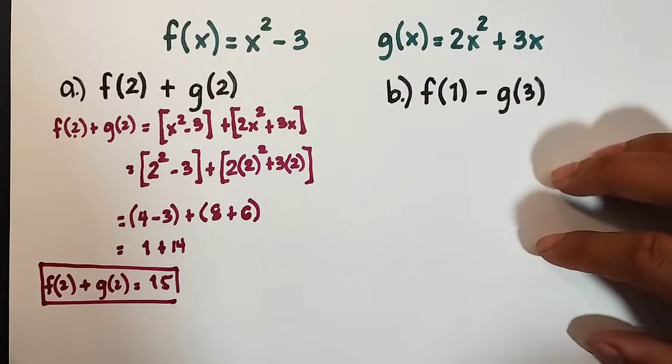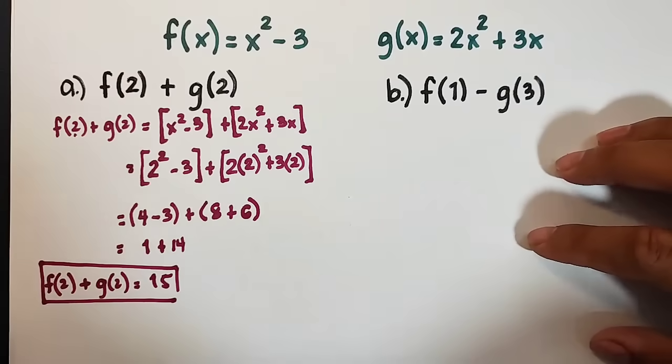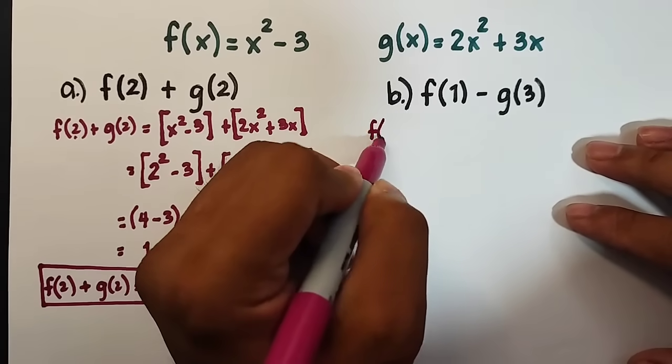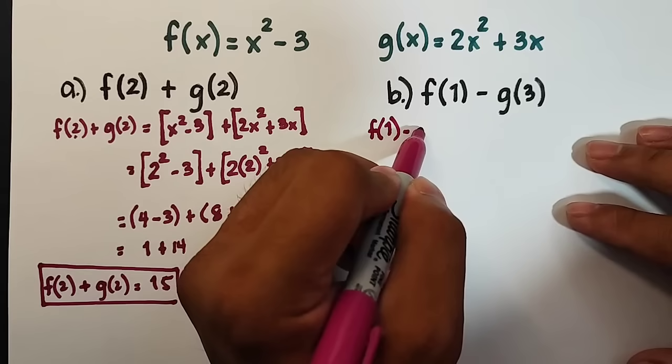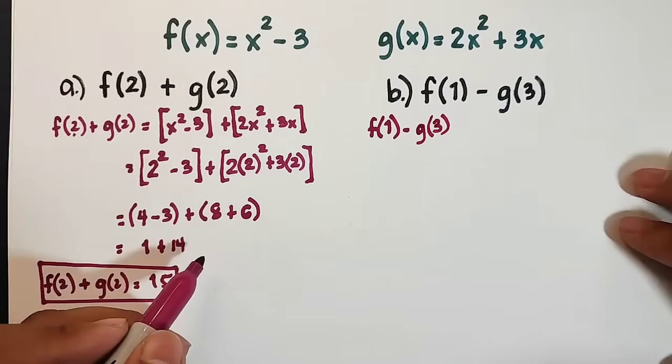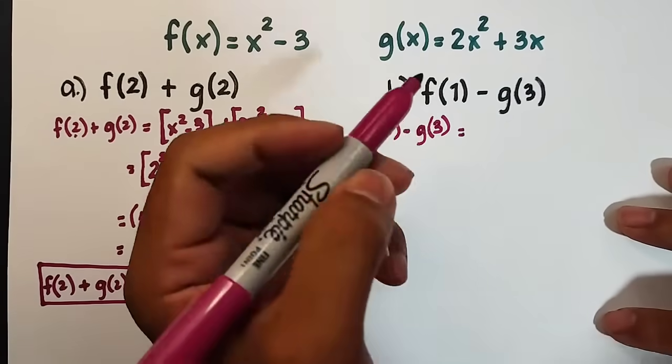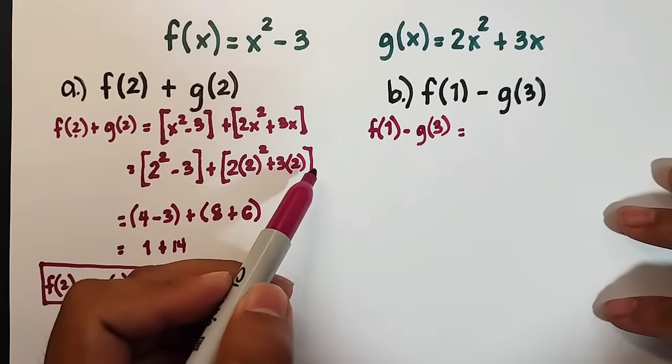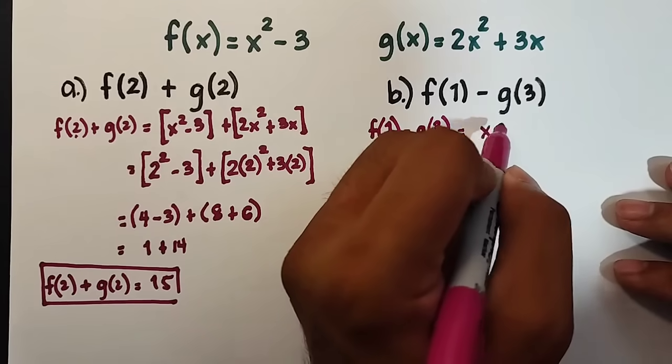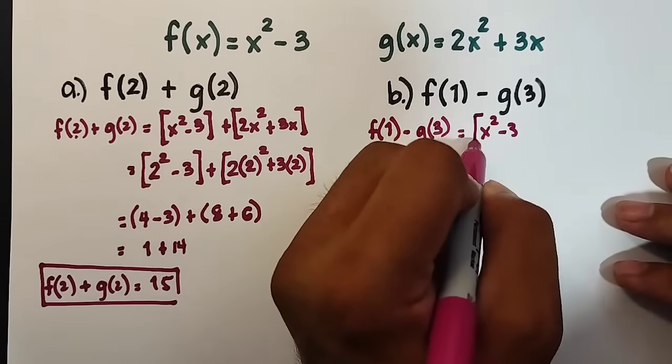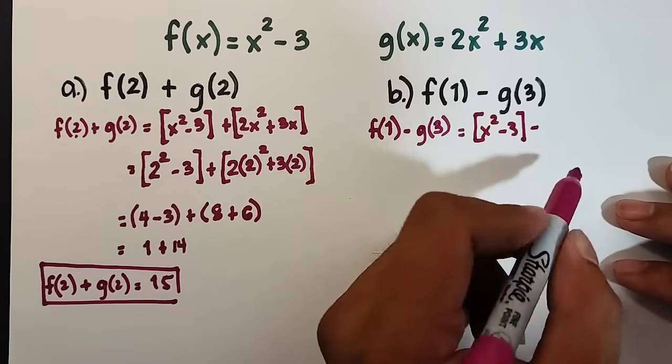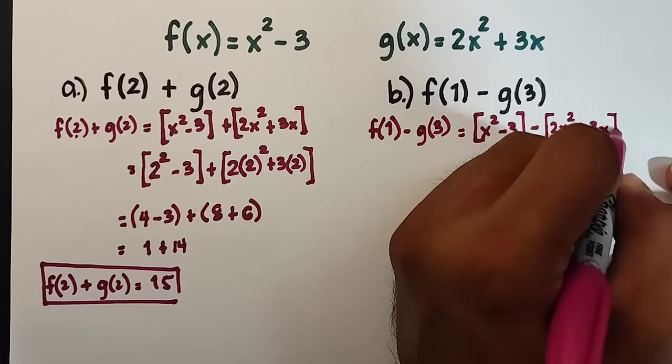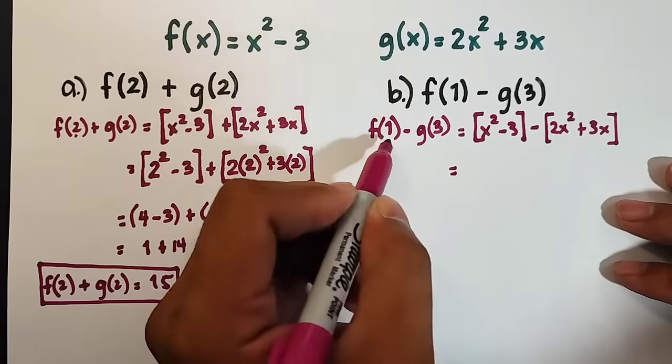Now let's proceed with item letter B. For letter B, what we need to do here is subtraction. So what will happen is that we have f(1) - g(3). So we have x² - 3 minus (2x² + 3x).